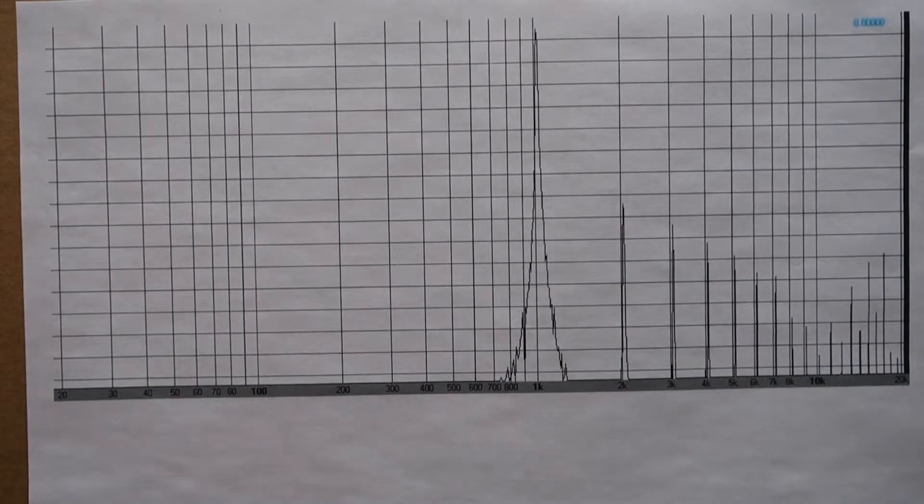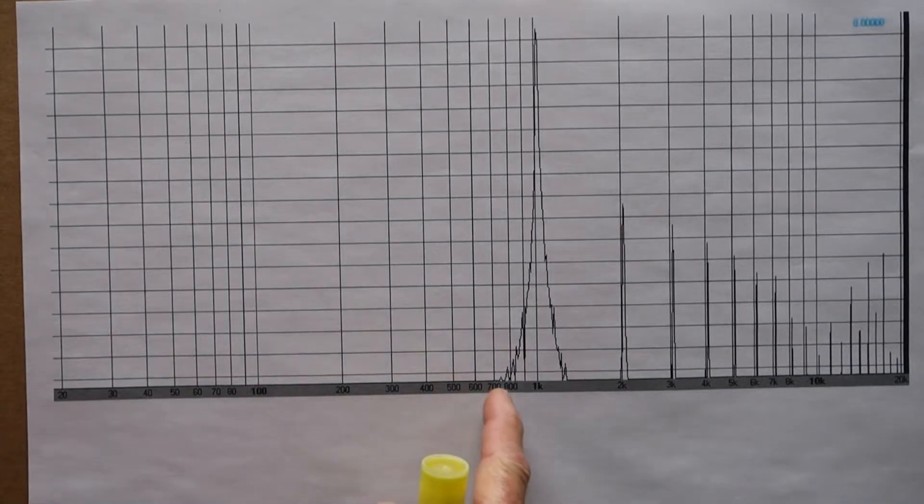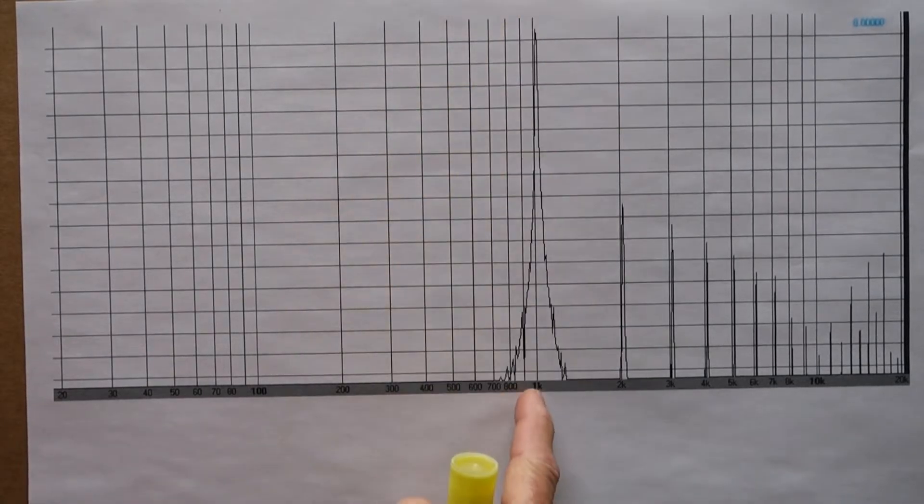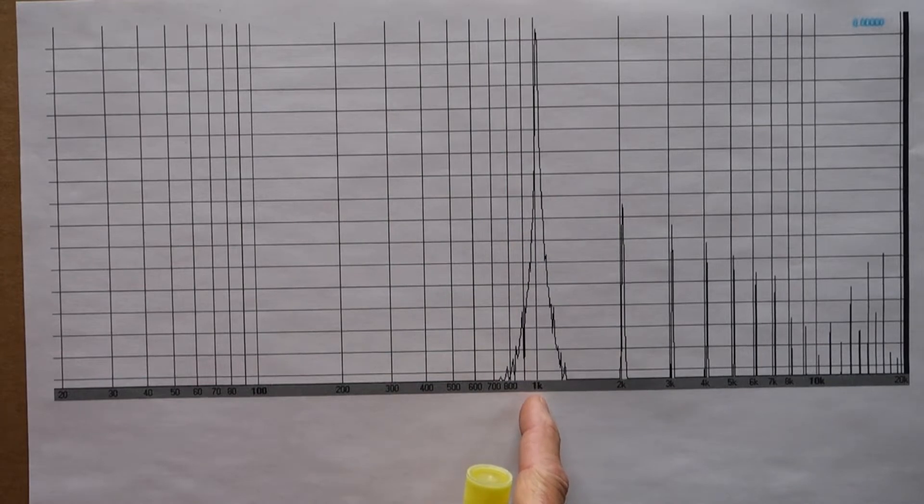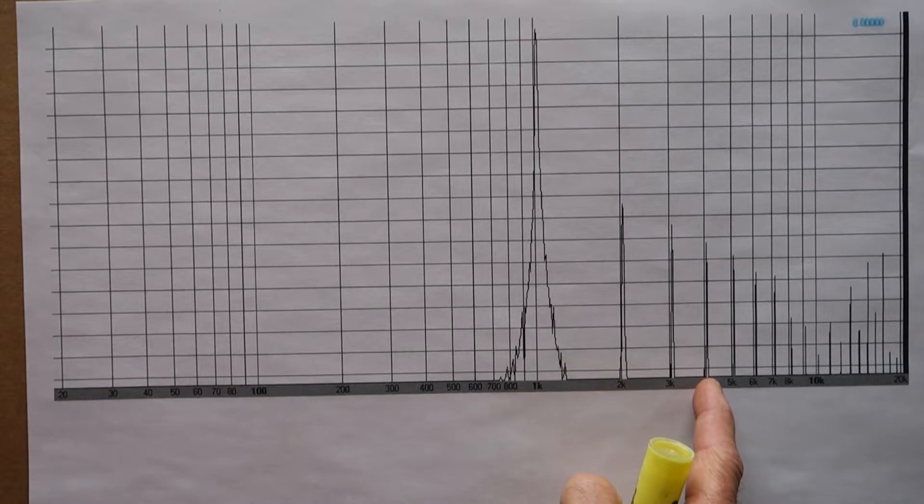Okay, if we look at this graph you'll notice here that we have a spike at one kilohertz and then we have other spikes here at various intervals.